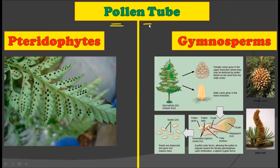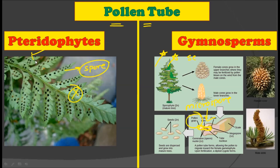The next difference relates to pollen tube formation. Pteridophytes are spore-bearing plants and do not show any development of the pollen tube. On the other hand, gymnosperms produce the pollen tube — as you can observe in this diagram, after the microspore germinates it gives rise to the pollen tube. This does not happen in pteridophytes. So pollen tube development occurs in gymnosperms but not in pteridophytes.